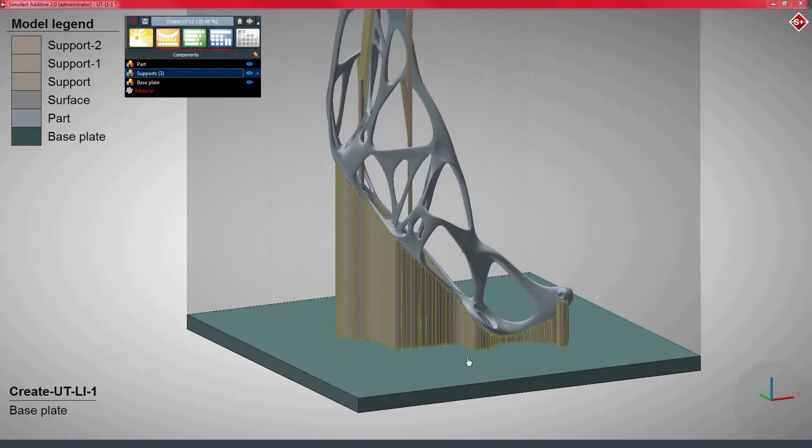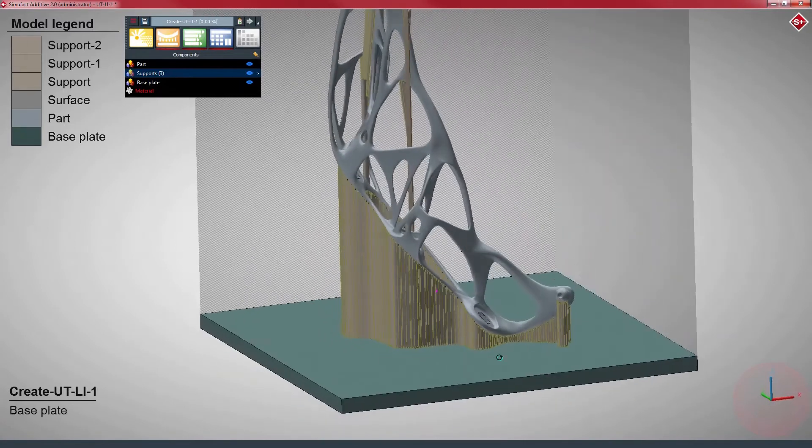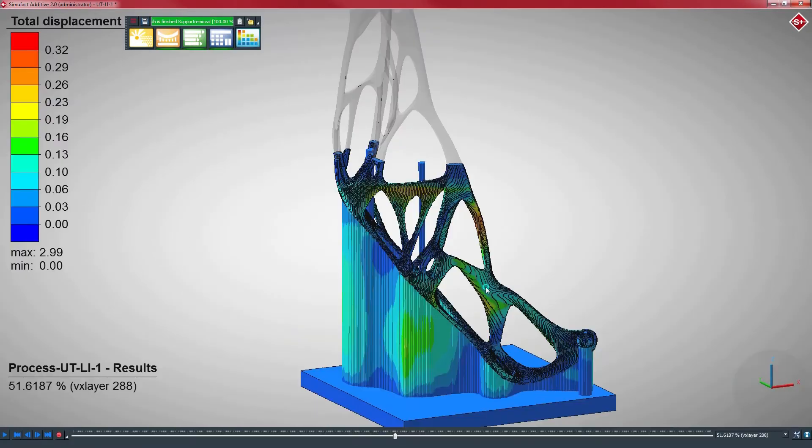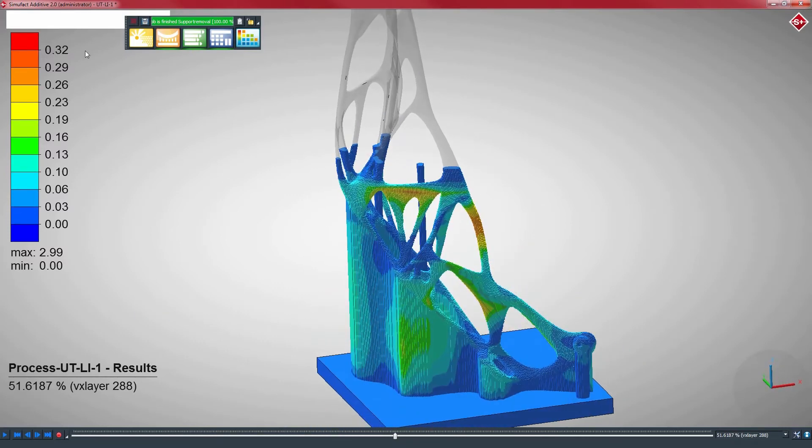The component geometry requires a high proportion of support structures. Thanks to the close cooperation between Voestalpine as a construction supplier and EDAG as a developer, we were able to reduce the support structure to a minimum, thus achieving a low-cost, low-resource product with little rework.